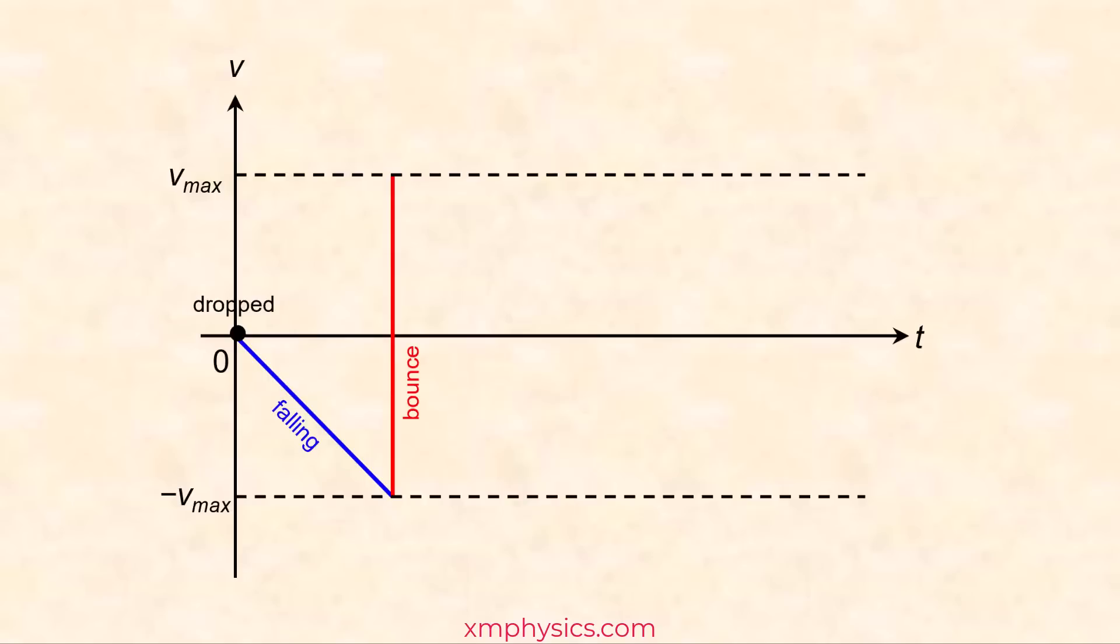So now the ball is rising after the bounce. As it rises, it slows down. Now whether it's falling or whether it's rising, the acceleration is downward, 9.81 meters per second squared. That's why the blue line and the green line are parallel. They should have the same gradient.